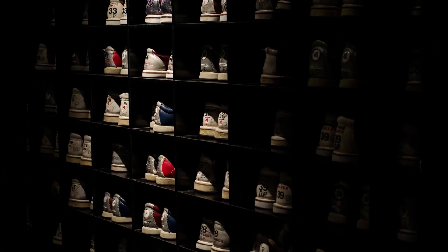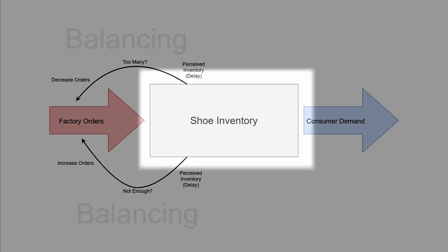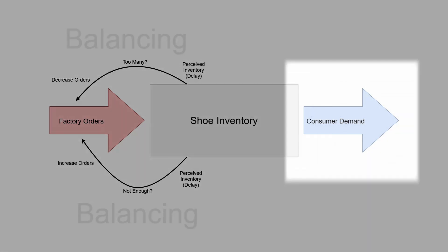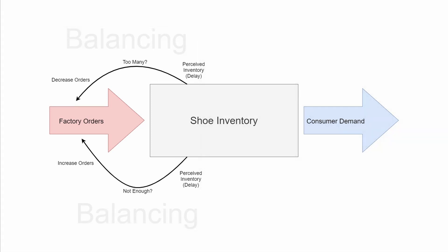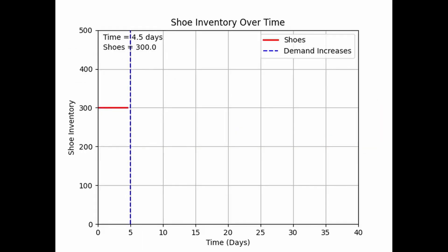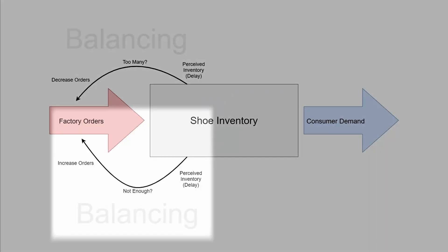The last example of a system with one stock is a system where there are delays — we'll look at one with two balancing loops. Here we'll use a shoe store as an example. The stock will be the store's shoe inventory, outflows will be customers buying shoes, and inflows will be production from a factory. Say the manager wants to keep three days' worth of shoes in inventory, and the inventory starts out constant with balanced inflows and outflows. All of a sudden, consumers start consistently buying more shoes.